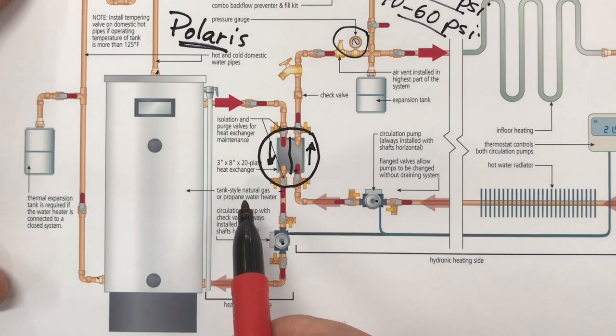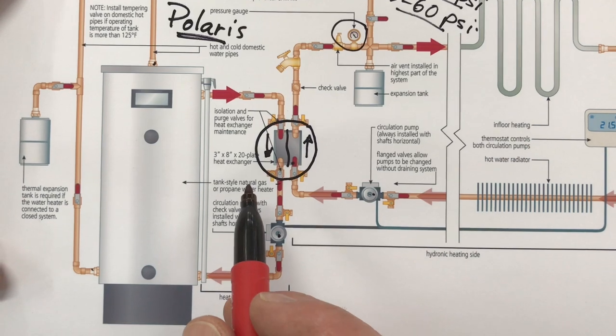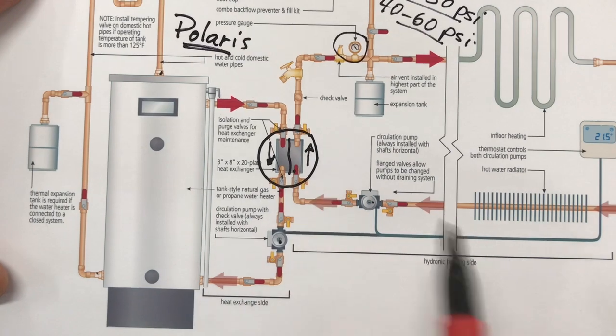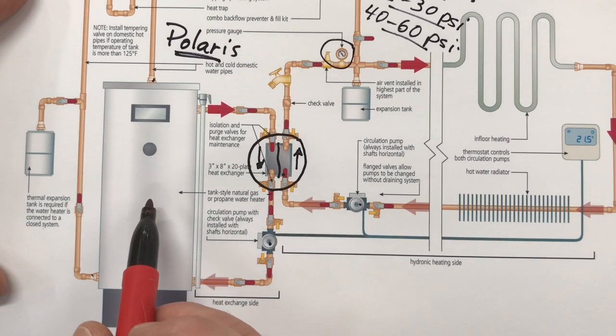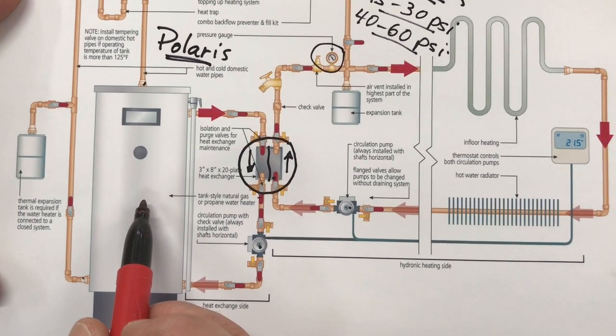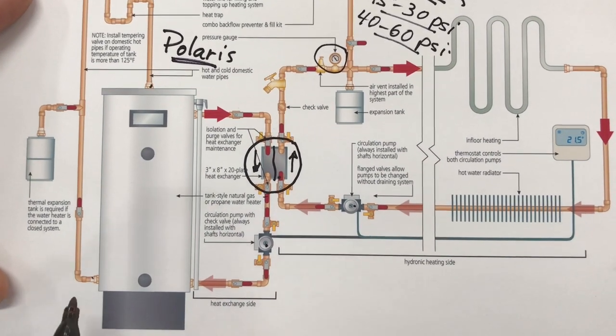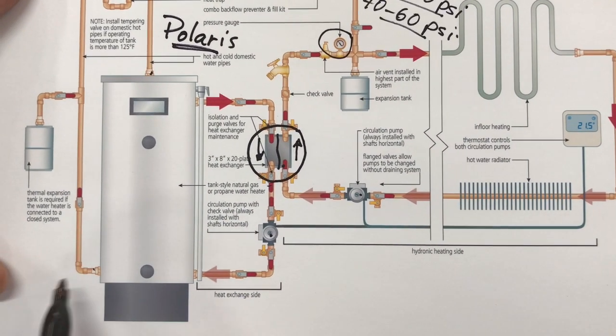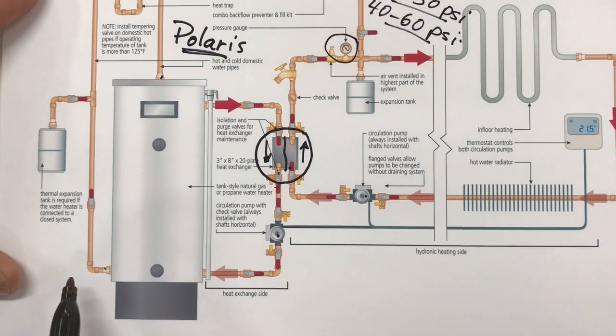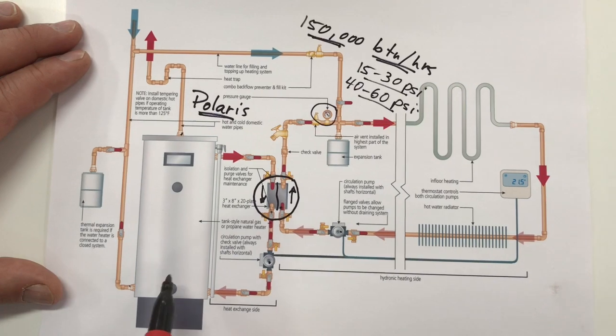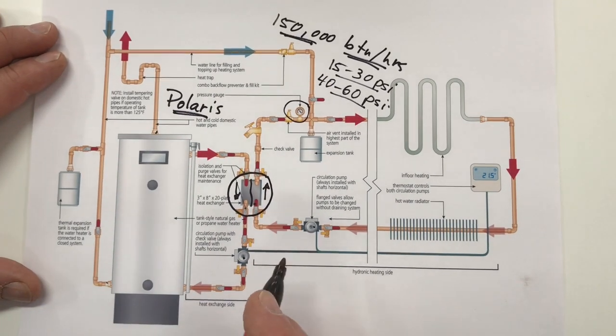So you'll have to flush some vinegar through that heat exchanger every so often, maybe every six months or a year or two years depending on the hardness of the water. You can sidestep that maintenance with a tank style heater. The only maintenance that a tank style heater requires is to flush any sediment out from the bottom of the tank which is quite an easy thing. You flip a valve after you've hooked up a hose to the tank and the sediment flushes out.